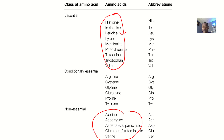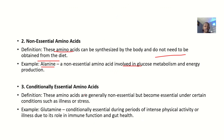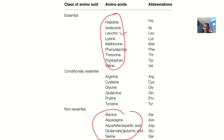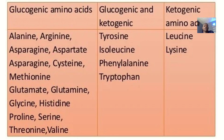Conditionally essential amino acids are generally non-essential but become essential under certain conditions such as illness or stress. An example is glutamine. The full list includes arginine, cysteine, glycine, glutamine, proline, and tyrosine.